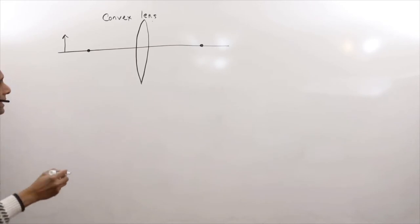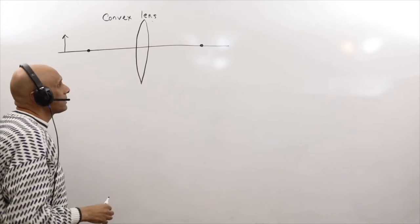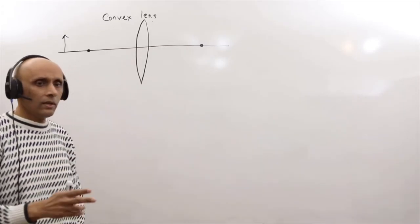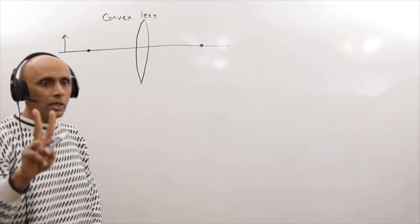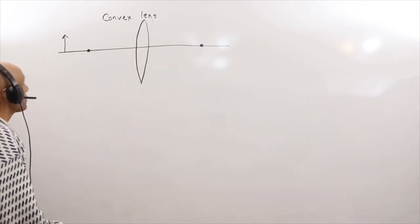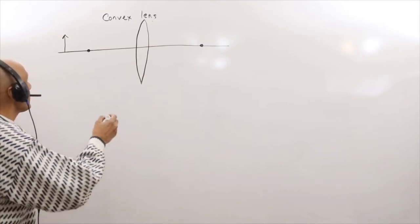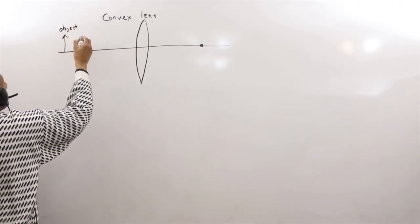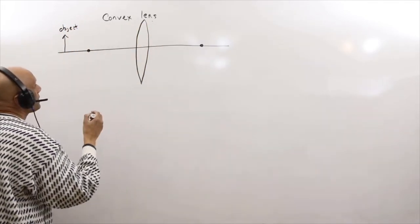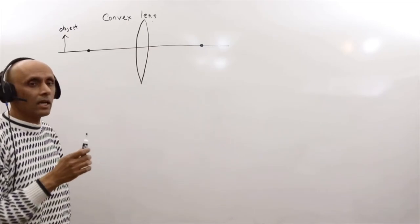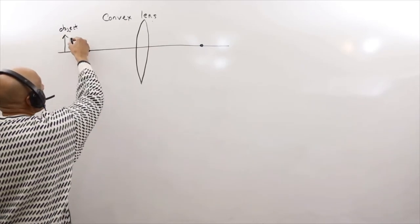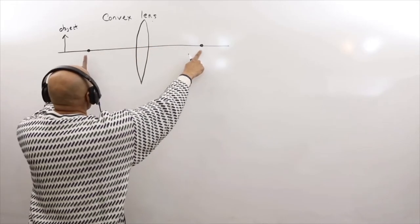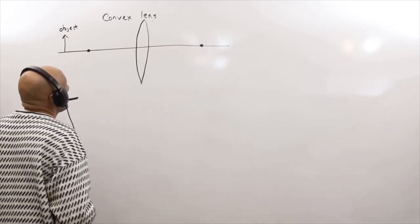We can always draw three ray diagrams to know exactly where the final image is going to be located. You don't have to draw all three light rays — you just need to understand how to draw two. In a convex lens, the main idea is that parallel light rays come in and get focused at a focal point, which is symmetric on both sides.